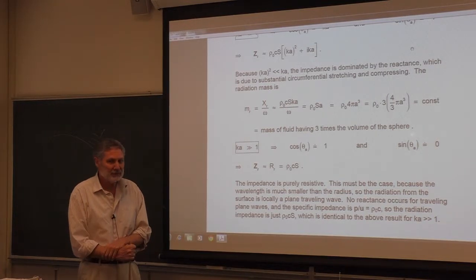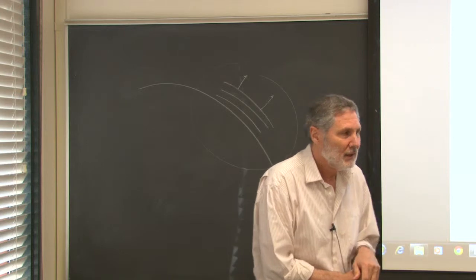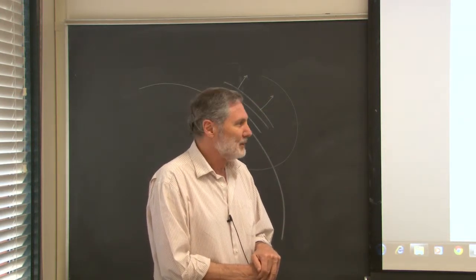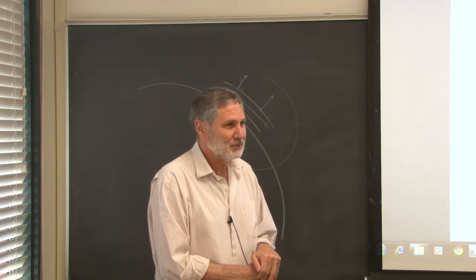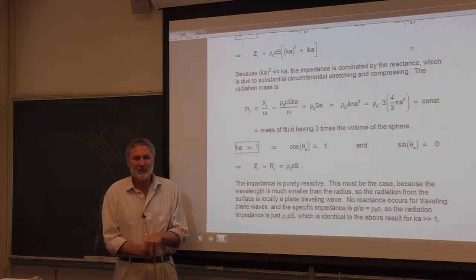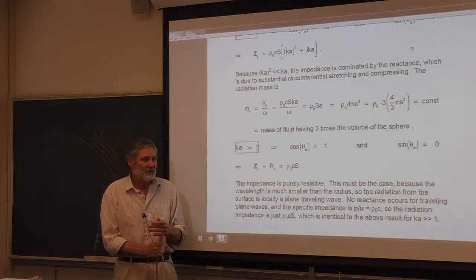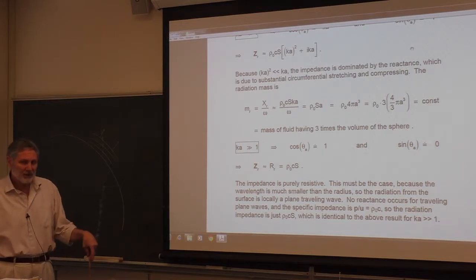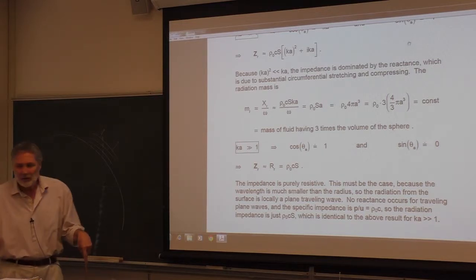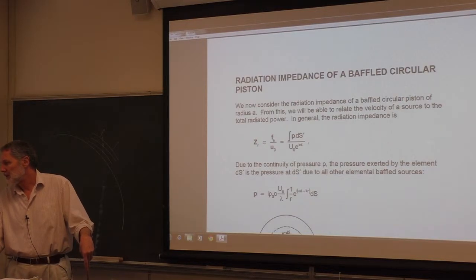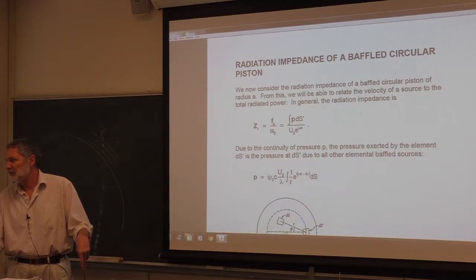In both limits the radiation impedance becomes simple, which is reassuring — it checks the result and we believe it. Usually the radiation impedance is complicated, but if you're operating in one of these regimes there's no reason to use the complicated full expression unless very high precision is required.